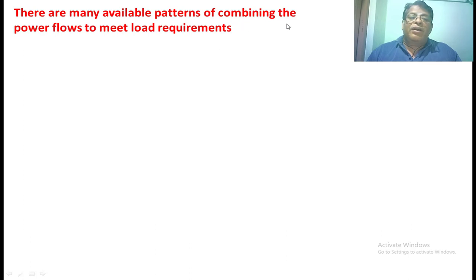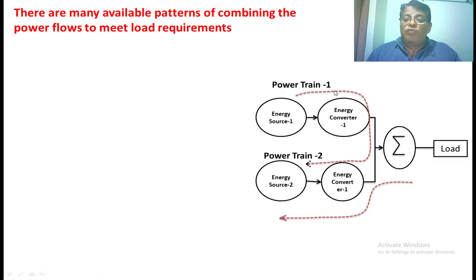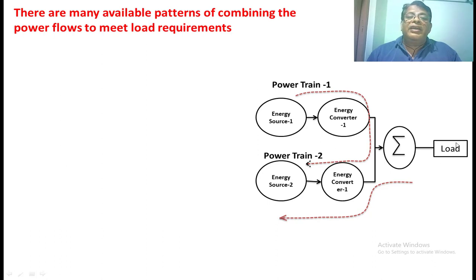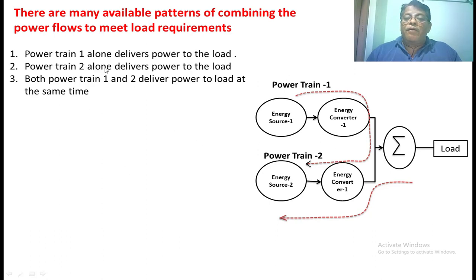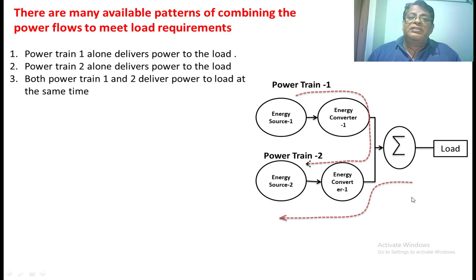There are mainly available patterns of combining power flow to meet the load demand in hybrid vehicles. Here we have two power trains: one is the IC engine with a converter, and another is the battery with a converter, both giving power to the load — the vehicle. In the first pattern, power train 1 only supplies power to the load. This occurs when there is no charge in the battery, so we cannot get any power from the battery, and the IC engine alone gives power to the vehicle.